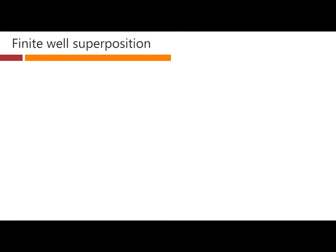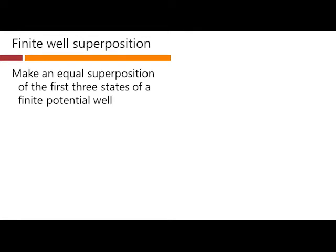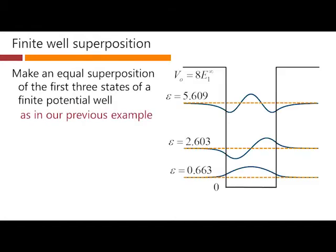We can illustrate what happens when we don't have equal energy spacing. By considering another example. We can make a linear superposition of the first three states of a finite potential well. The energy separations there between the states are not in integer ratios. So let's look and see what happens if we superimpose some other states. What we're going to do here. Is we're going to make an equal linear superposition. Of the first three states of a finite potential well. So we remember for example. The previous example that we worked through. We had energy eigenstates at 0.663 units of energy. Another one at 2.603 units of energy. And these are all approximate numbers. And another one at 5.609 approximately units of energy. We remember the form of the various wave functions here. These are not in integer ratios.